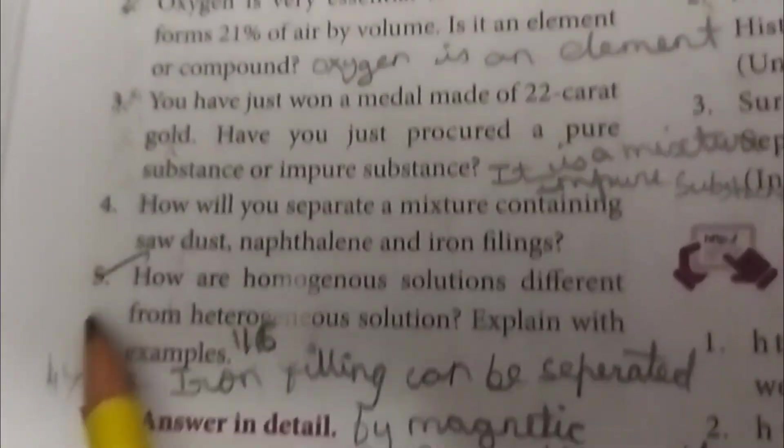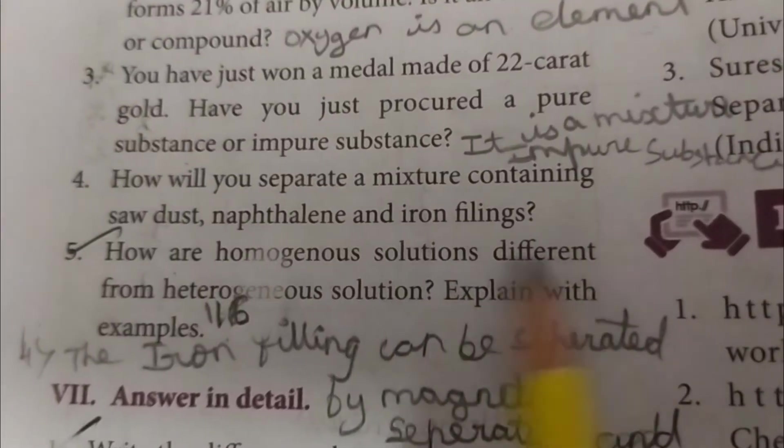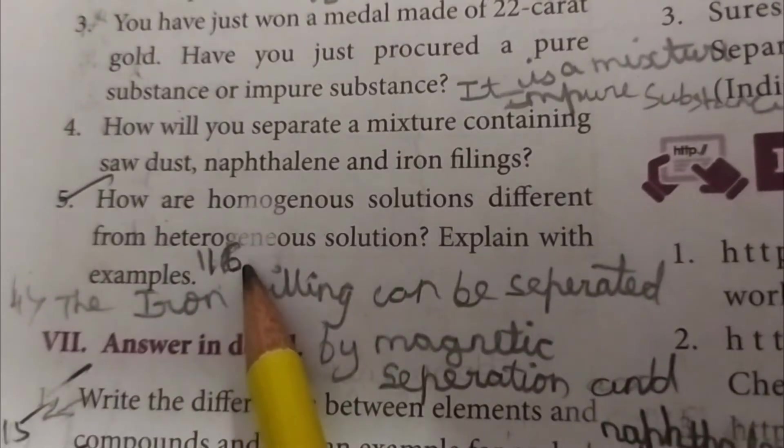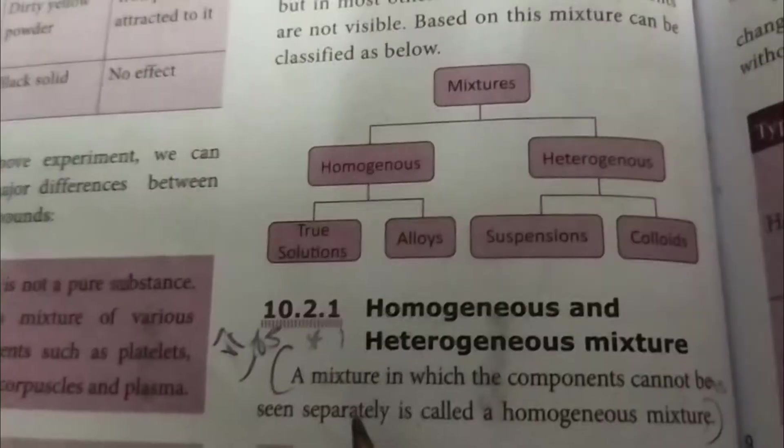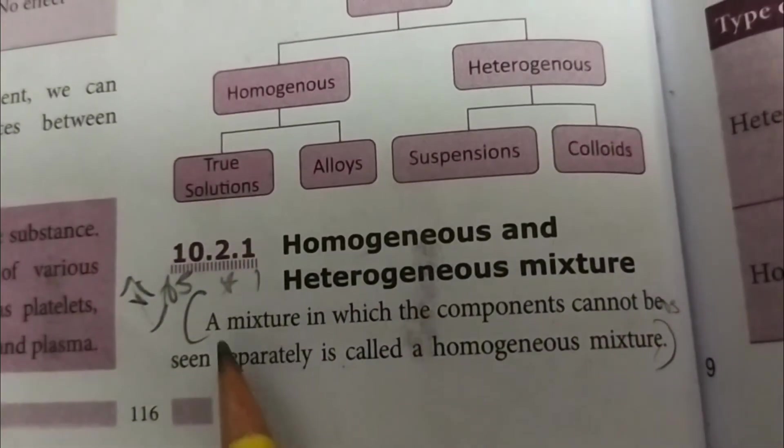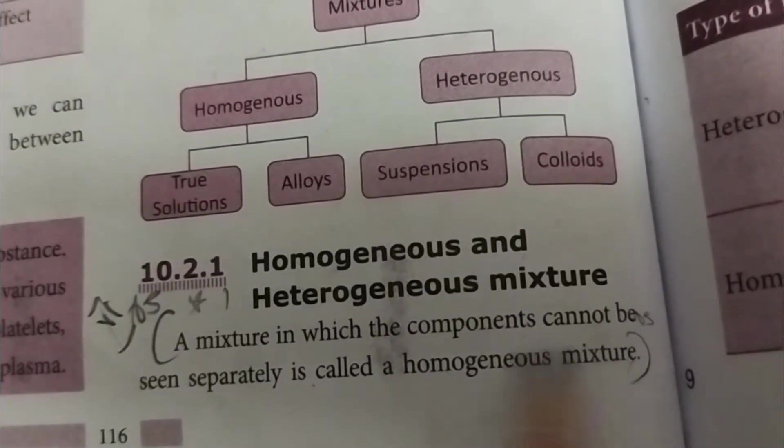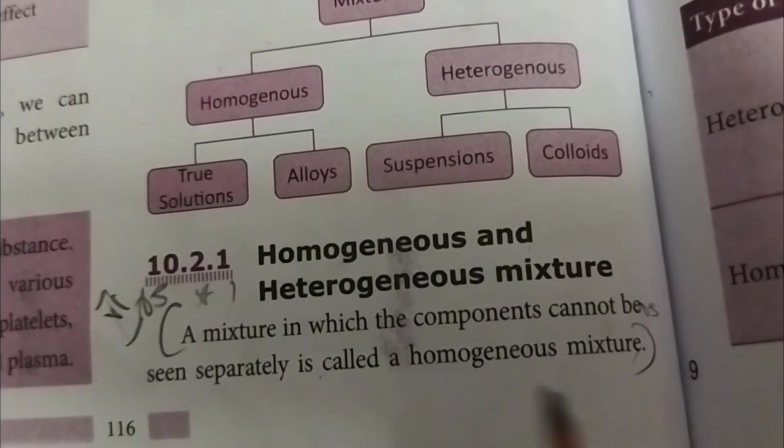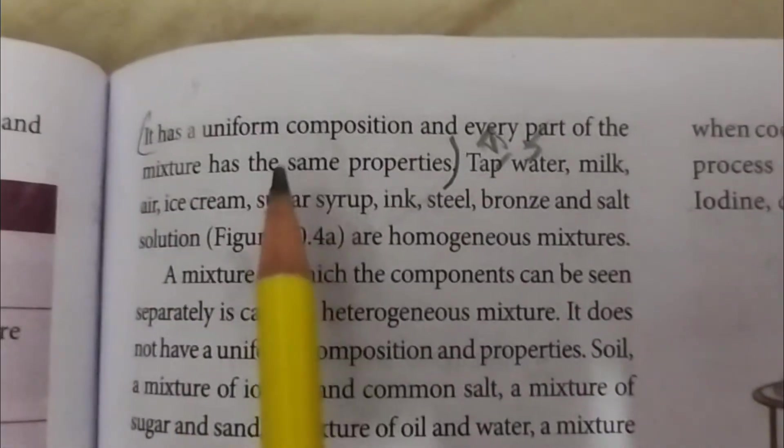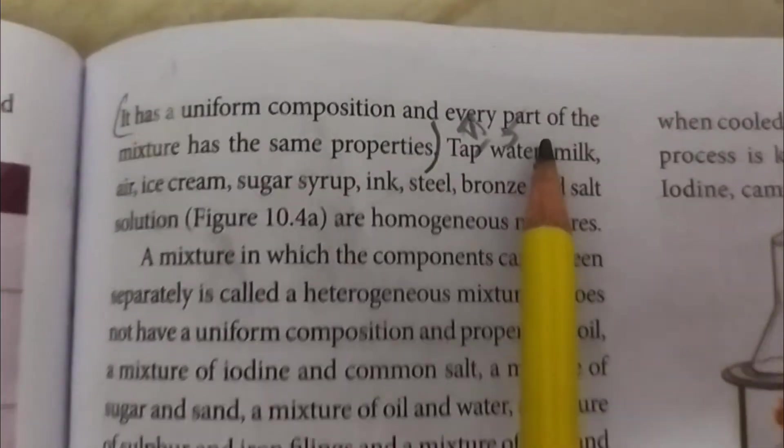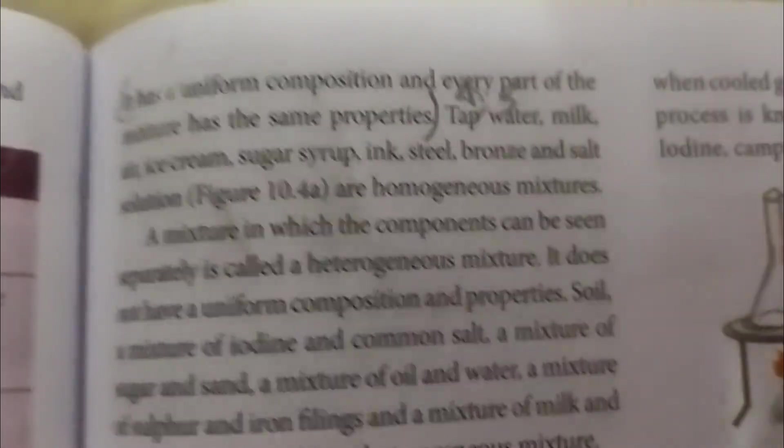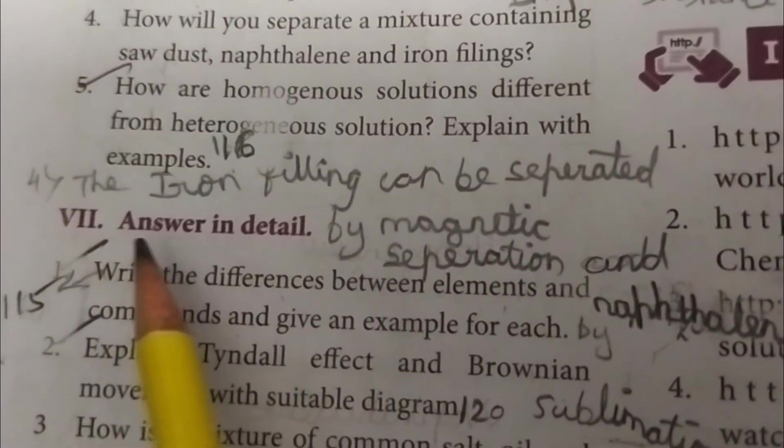Fifth question: How are homogeneous solutions different from heterogeneous solutions? Explain with examples. Take page number 116. A mixture in which the components cannot be seen separately is called a homogeneous mixture. It has uniform composition and every part of the mixture has the same properties.